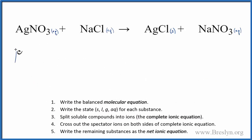Ag, that's silver, that'll have a plus charge. Then NO3, that's the nitrate ion, that has a one minus charge. Na, that's in group one on the periodic table, has a positive one charge. Plus Cl, that has a negative charge. So those are our reactants.